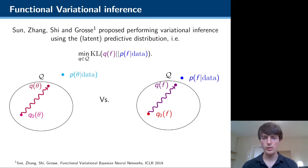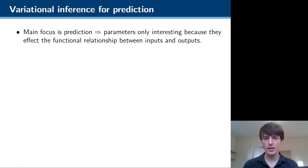So on the left hand side you have the typical variational inference setup where you try to approximate the posterior distribution over parameters, and on the right hand side is this approach where instead you try to learn a distribution which is similar to the posterior distribution over latent functions directly.